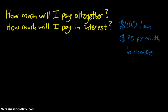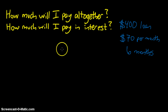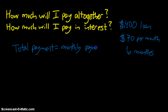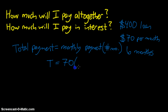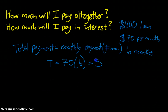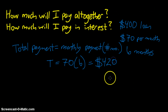So for the first part — how much will I pay altogether? Your total payment is a simple formula: your monthly payment multiplied by the number of months you're going to pay. So our total payment is our monthly payment of $70, and we're paying $70 for six months. You might be able to do that one in your head: $70 times six is $420. That answers the first question — how much will you pay altogether? You will pay $420 altogether.